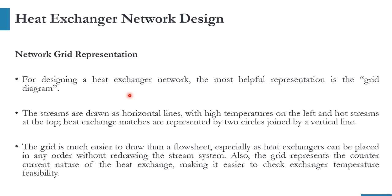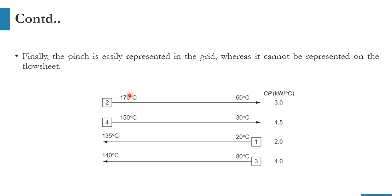For the heat exchanger network design, how do we represent the network grid? First, we need to arrange the streams so that hot streams are placed first and cold streams are placed below. This is a four-stream example with two hot streams and two cold streams. Hot stream 2 goes from 170°C to 60°C, the other hot stream from 150°C to 30°C, with CP values of 3 and 1.5. Cold streams go from 20°C to 135°C and 80°C to 140°C. We have already done this example for utility and pinch temperature calculations, and now we will do the heat exchanger network design for it.